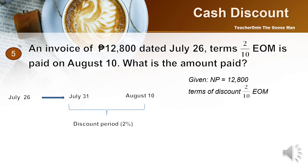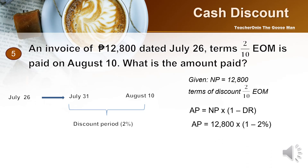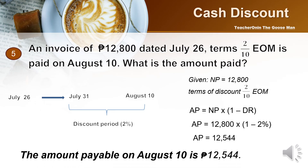The given: net price equals 12,800, and the terms of discount are 2/10 EOM. Using the formula, amount payable equals net price times (1 minus discount rate). Plugging in: 12,800 times (1 minus 2%). Using the calculator, the amount payable equals 12,544. Therefore, the amount payable on August 10 is 12,544.